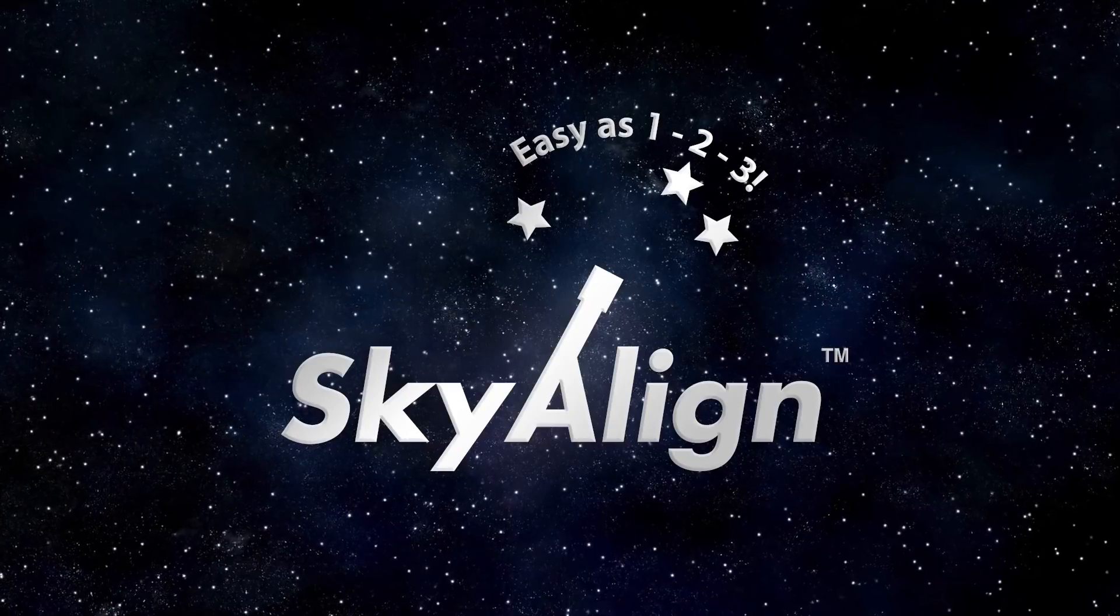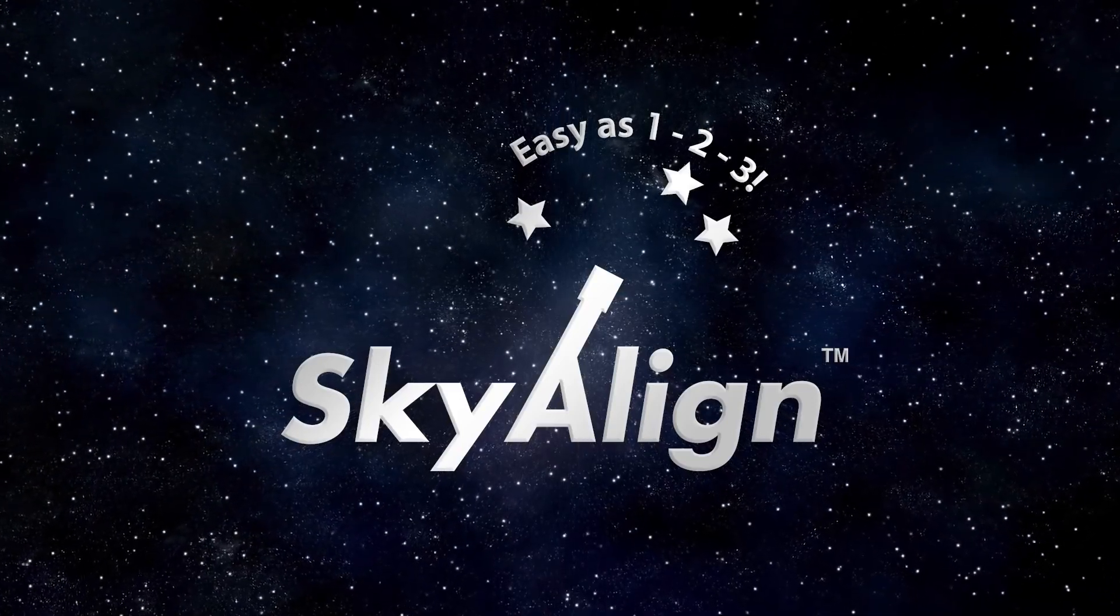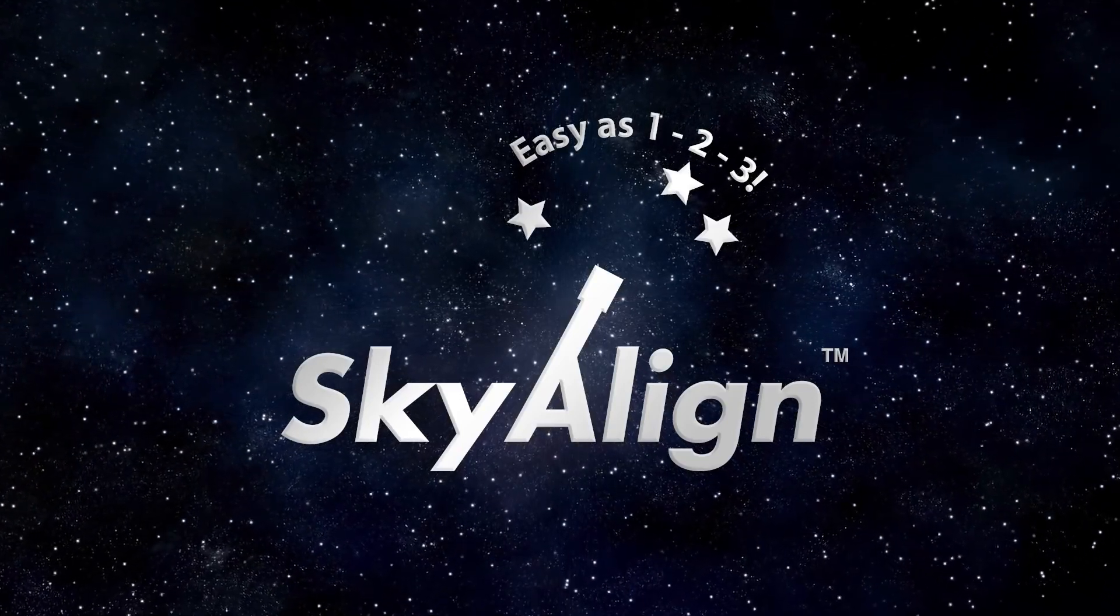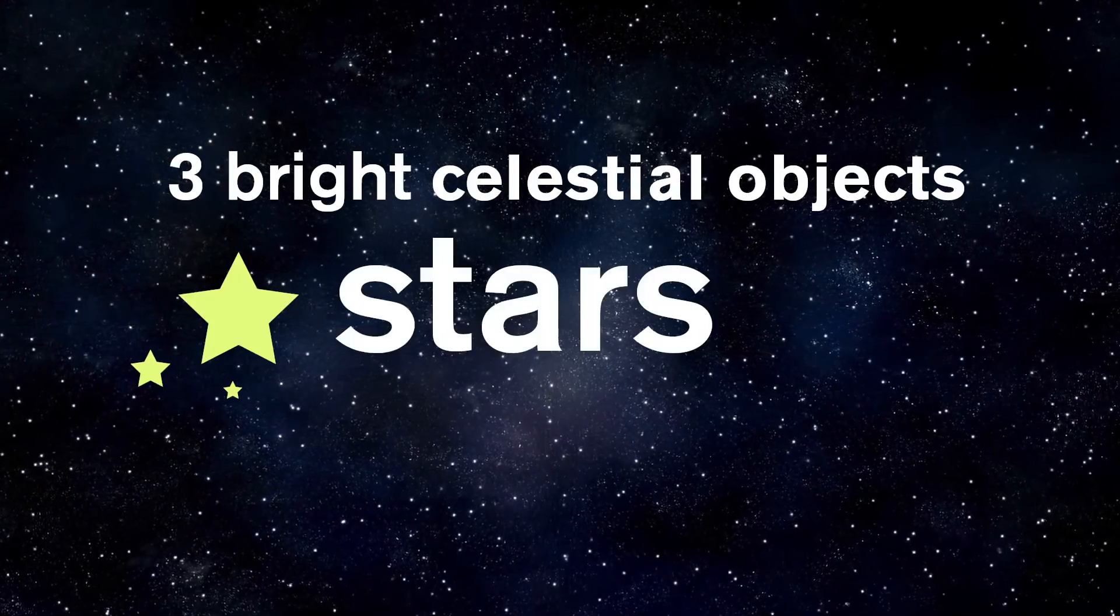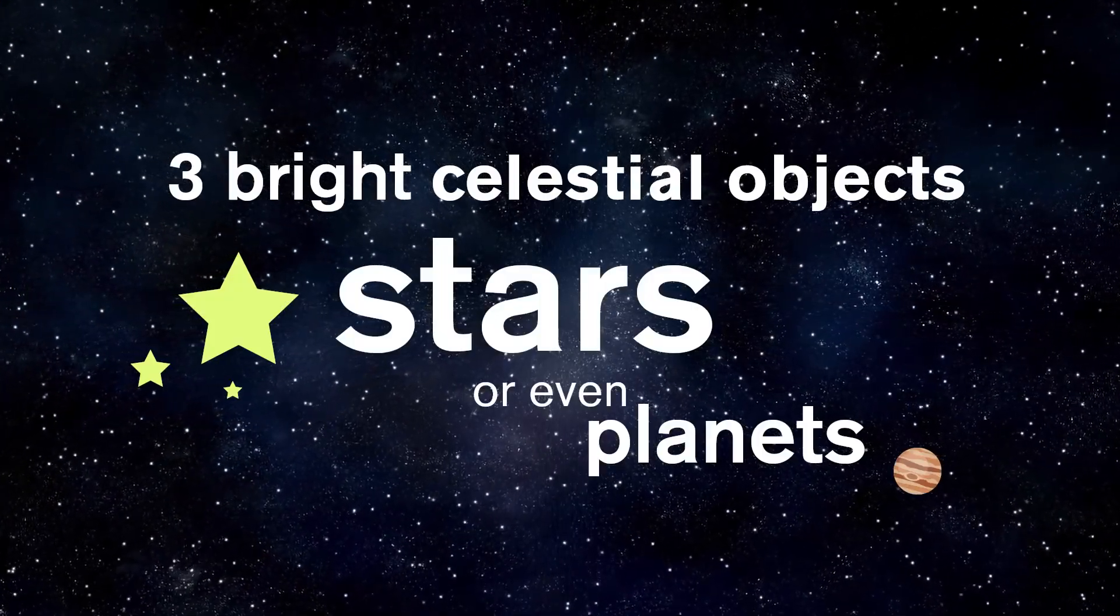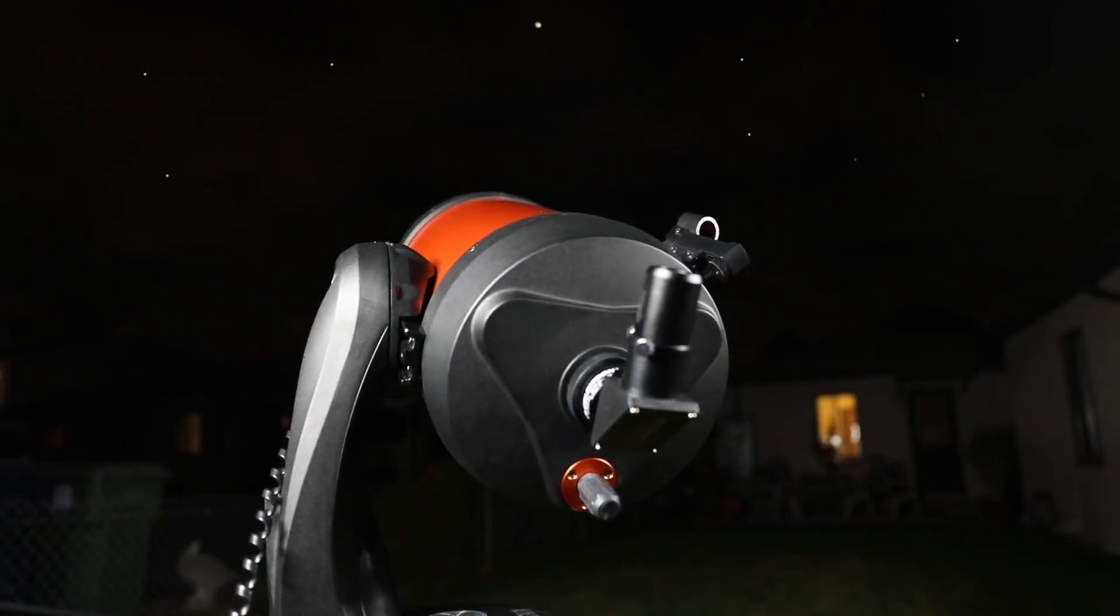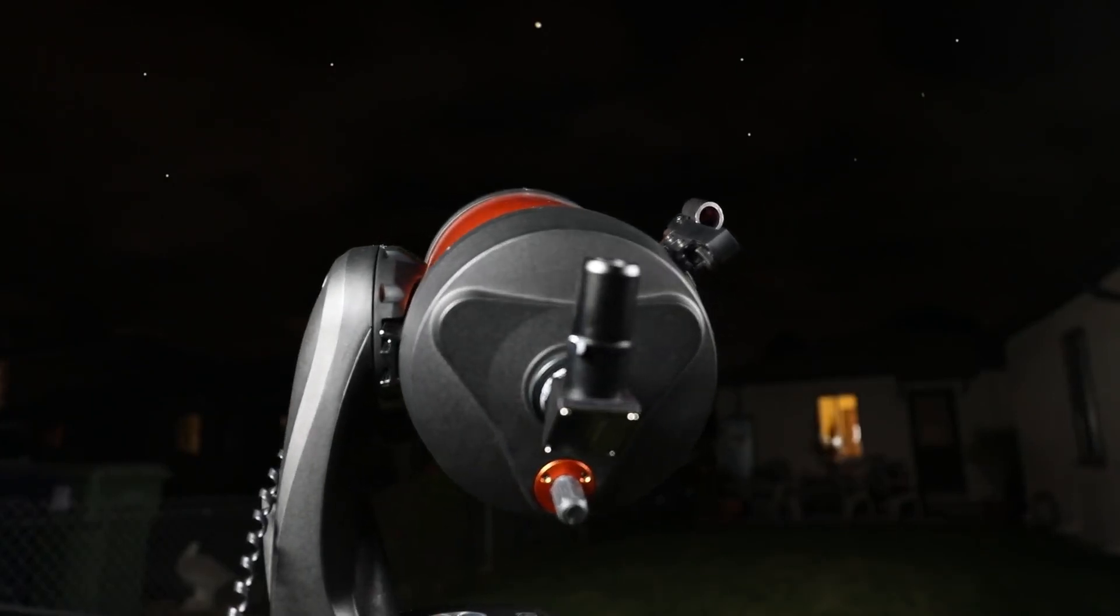Celestron invented SkyAlign to be the easiest, fastest telescope alignment procedure. Using just three bright celestial objects, stars or even planets, SkyAlign can triangulate its position and locate thousands of other objects instantly.